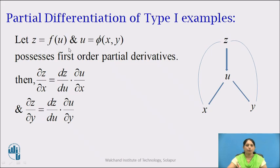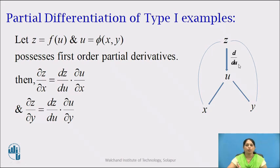Let z = f(u) and u = phi(x, y) possess first order partial derivatives. Since z is a function of single variable u and u is a function of two variables x and y, z is also a function of x and y. To differentiate z with respect to x and y, we go for partial differentiation to obtain ∂z/∂x and ∂z/∂y. Since z is a function of single variable u, we use ordinary differentiation dz/du. Since u is a function of two variables x and y, we use partial differentiation ∂/∂x and ∂/∂y.